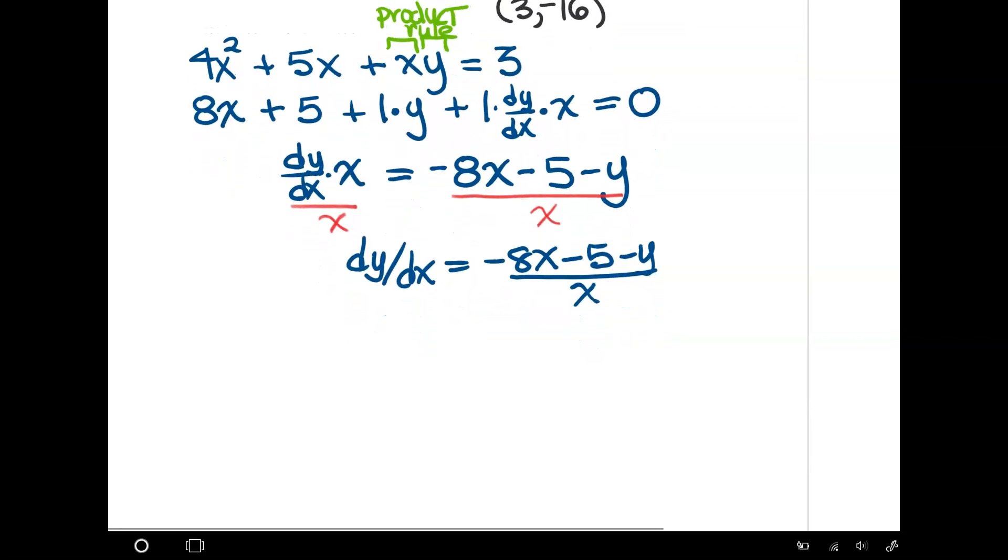So then what they asked for is for me to get this derivative at x = 3. Well, I also need to plug in the y value. So now I'm going to plug in my point that's given to me, the ordered pair (3, -16). So I'm going to have -8(3) - 5 - (-16), all divided by the x value, which is 3.